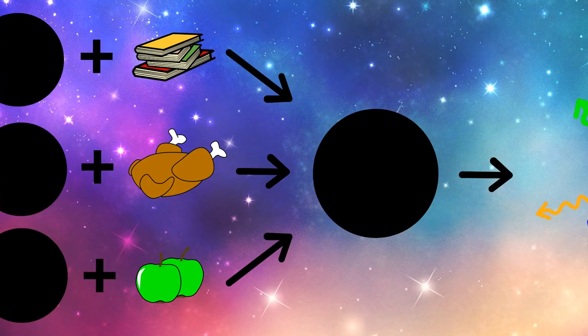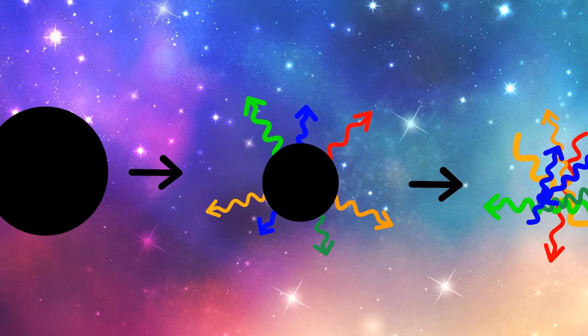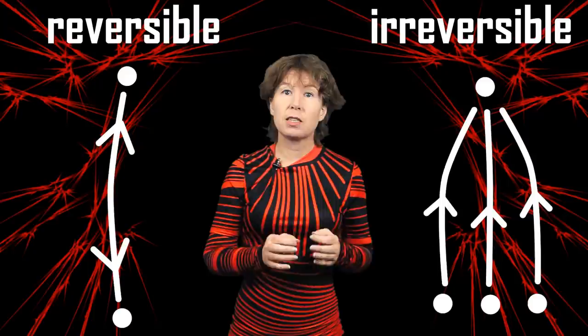This means that, besides these three quantities, it does not matter what you formed the black hole from, or what fell in later — the result is the same thermal radiation. Black hole evaporation, therefore, is irreversible. You cannot tell from the final state — that's the outcome of the evaporation — what the initial state was that formed the black holes. There are many different initial states that will give the same final state.